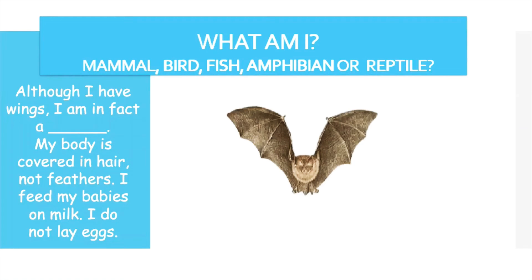Although I have wings, I am in fact a mammal. My body is covered in hair, not feathers. I feed my babies on milk and I do not lay eggs. The clue: the body is covered in hair, not feathers — so it is not a bird. It feeds babies on milk and does not lay eggs, so a bat is a mammal.